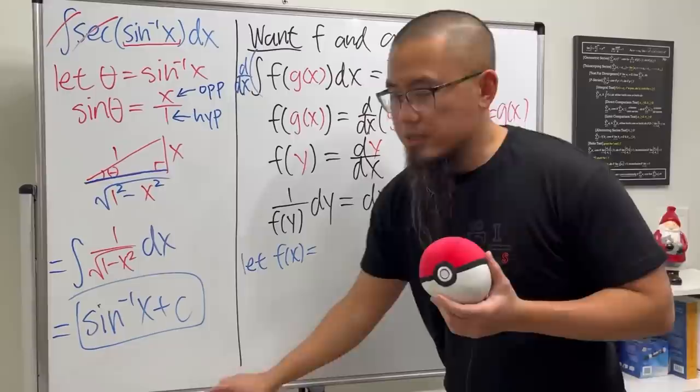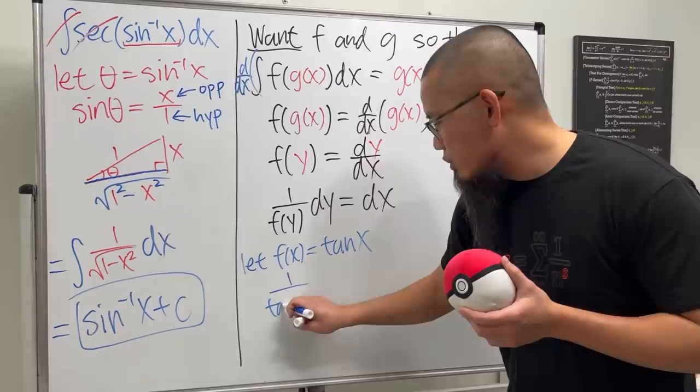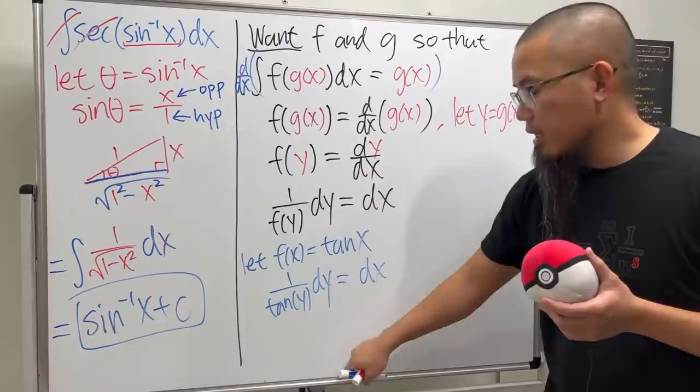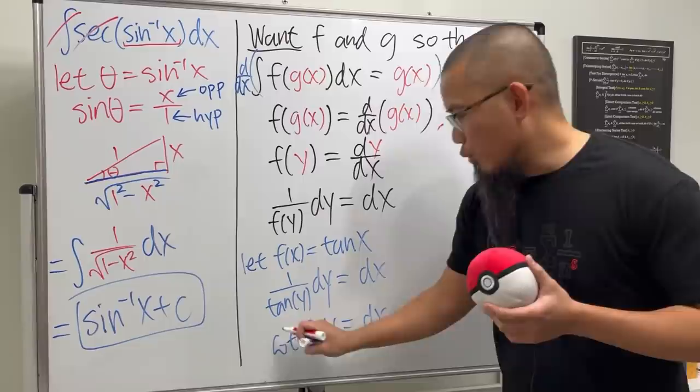This we get 1 over tangent of y dy and this right here is just equal to dx. 1 over tangent is cotangent of y and then we have the dy and this is equal to dx.